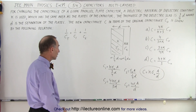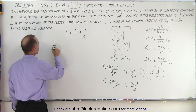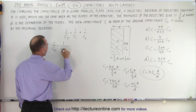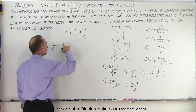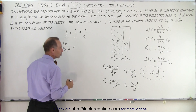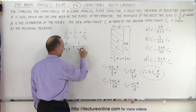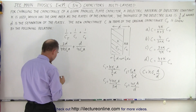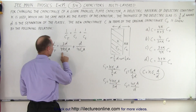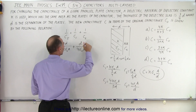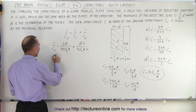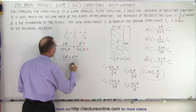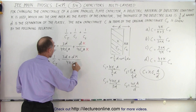Now what we have to do is plug those in. We have 1 over C-total equals 1 over C1, so that would be 1 over 4K epsilon-naught A divided by the denominator, which now goes to the numerator, so this becomes 3D, plus 1 over C2, that would be 1 over 4 epsilon-naught A divided by D. D goes into the numerator right there. Now we need the same common denominator — we're missing a K over here, so we're going to multiply both the top and the bottom by K.